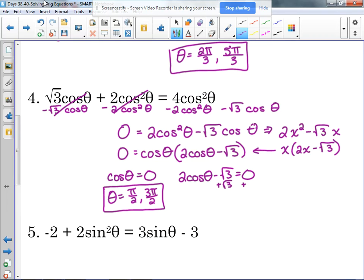For the other one, this is going back to a couple days ago when we were doing those simple trig equations. Add the square root of three, divide by two, find the value on the unit circle. That would be pi over six and eleven pi over six.